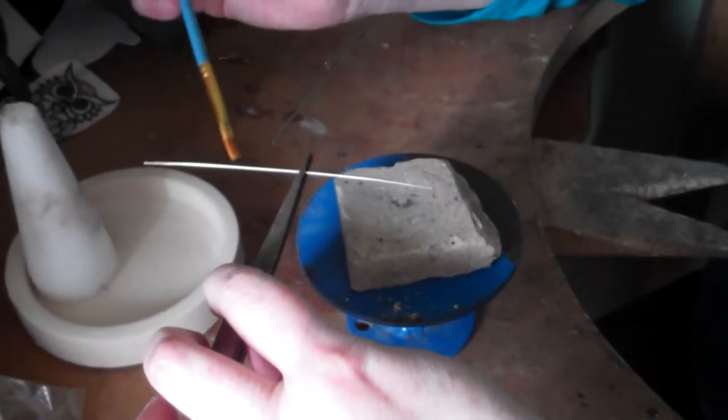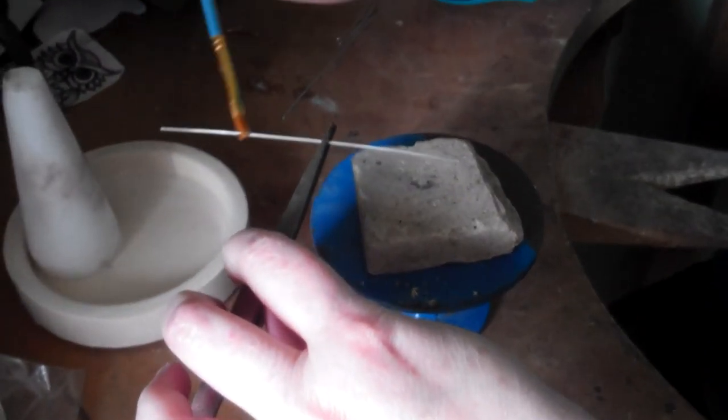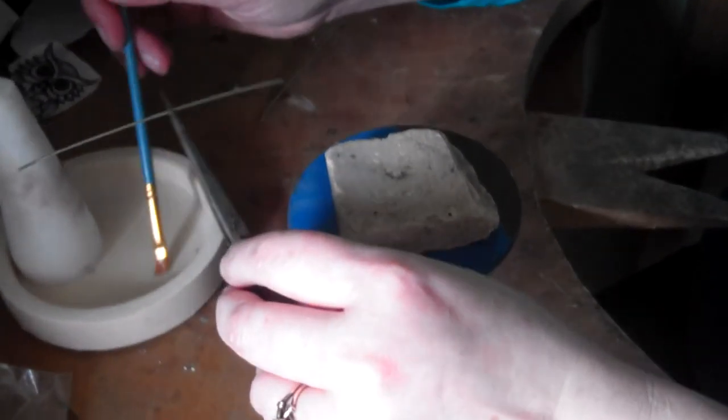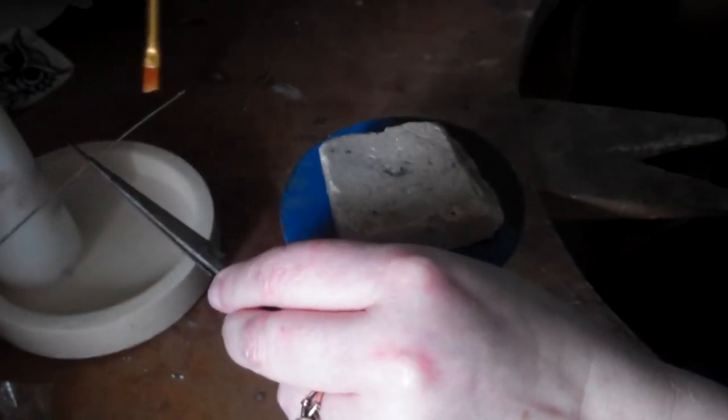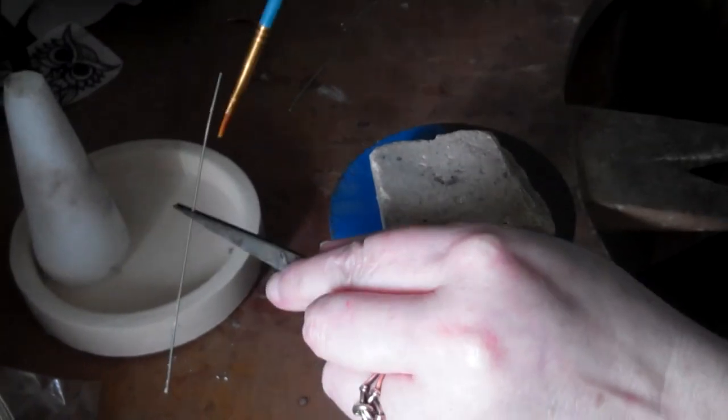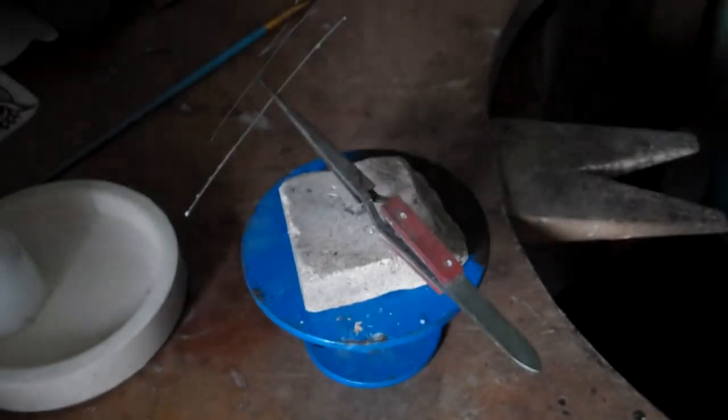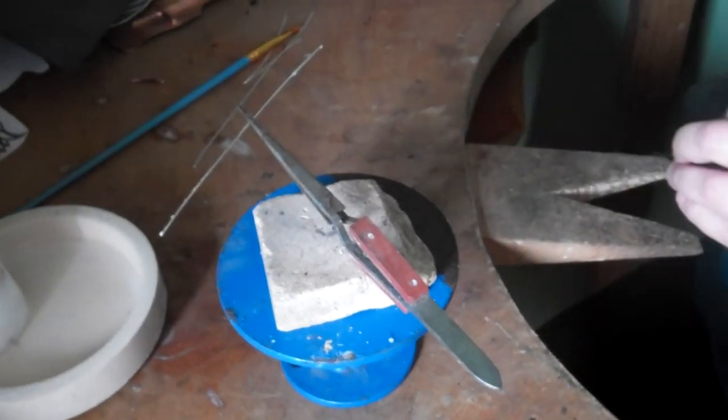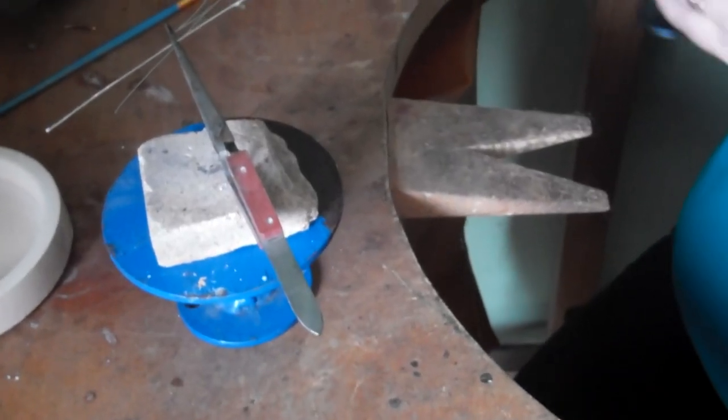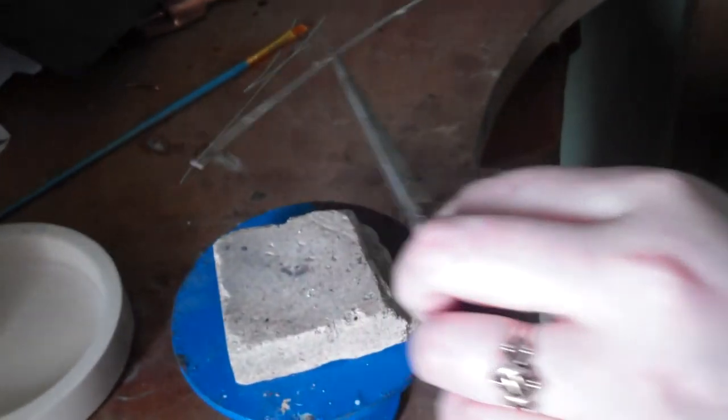So I've got my flux, painting it onto the length of the wire. My wire is in a pair of pliers so I don't touch it because obviously this is hot. You don't want to burn yourself. I can prop that on there while I light my torch. There we go.